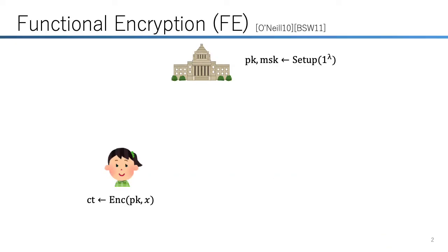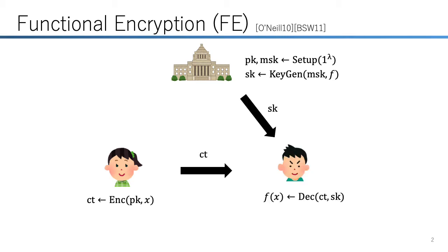I will begin by recalling what functional encryption is. Functional encryption, or FE for short, is a generalization of public key encryption and also a generalization of various cryptographic notions such as identity-based encryption or attribute-based encryption. Similarly to public key encryption, a user can encrypt a message using a public key. The salient property of FE is that an owner of the master secret key can generate a secret key associated with a function. When a ciphertext for x is decrypted by a secret key for a function f, it only reveals f(x) and nothing else.